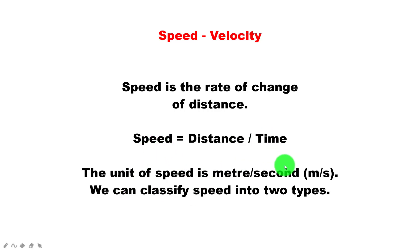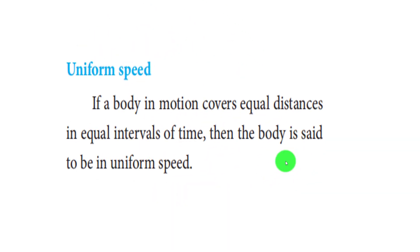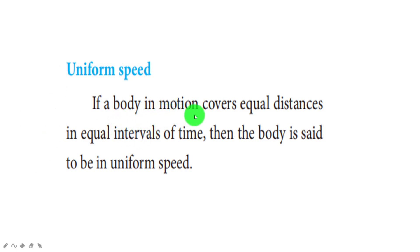We can classify speed into two types: uniform speed and non-uniform speed. Uniform speed is defined as follows — if a body in motion covers equal distances in equal intervals of time, then the body is said to be in uniform motion.